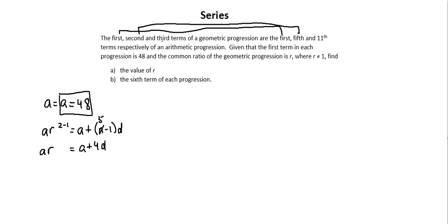And a third equation: the third term of the geometric goes with the 11th term of the arithmetic. So we will have ar to the power of 3 minus 1 equals a plus quantity 11 minus 1d. Here, simplifying to ar squared equals a plus 10d.